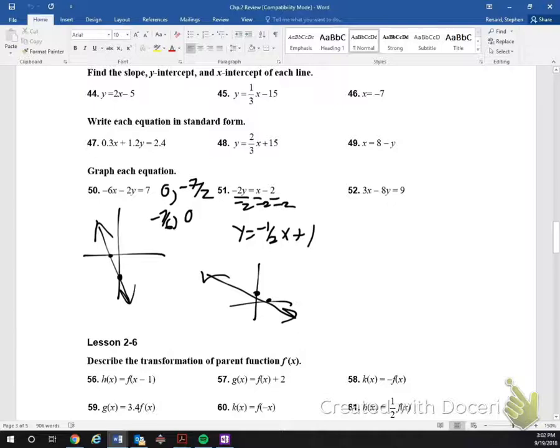So we're looking at number 51. If you look what I did, I divided everything by two, or negative two. So I got y equals negative one-half x plus one. That gives me the equation in slope-intercept form. So my intercept is 0,1. My slope is one-half.